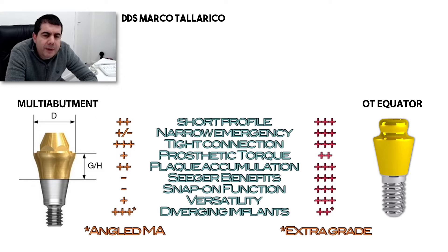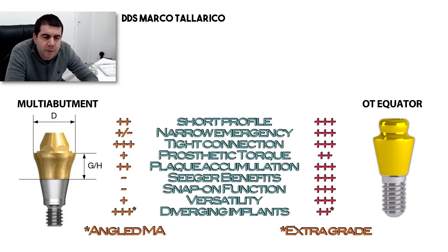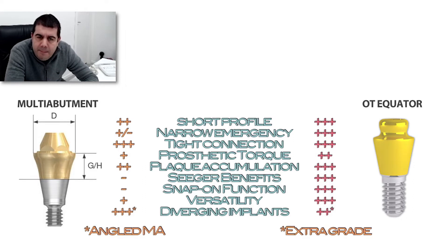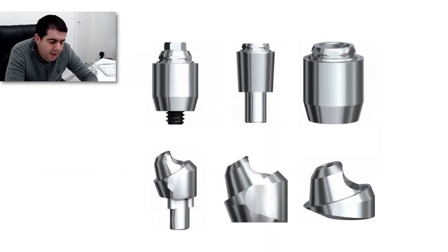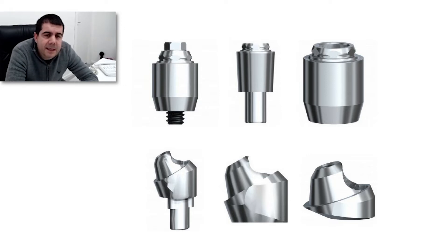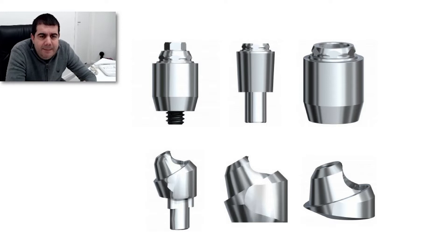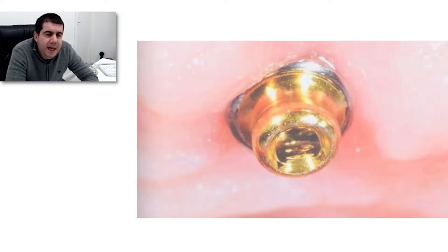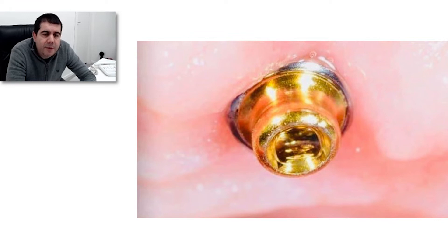The narrow emergency diameter of the OT equator abutment results in a perfect match with the implant platform, providing an ideal solution in platform switching. Standard MUA components begin with a reduced profile that enlarges to reach a widest area. The emergency area may be lightly reduced in both options, but while the MUA grows in height and diameter providing a larger platform, the OT equator keeps its diameter regardless of gingival height.